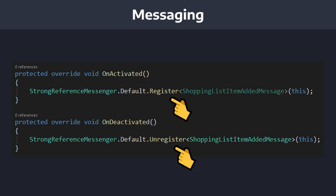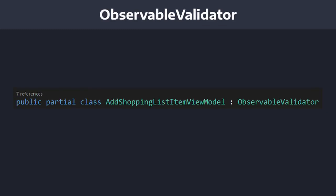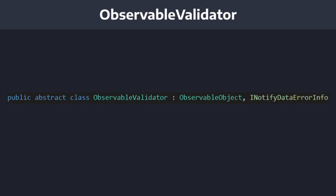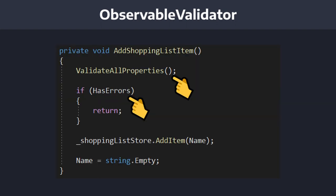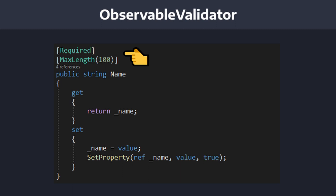Most importantly, these lifecycle methods on ObservableRecipient are perfect for subscribing to messengers and cleaning up subscriptions. The MVVM Toolkit also exposes an ObservableValidator that extends ObservableObject and provides an implementation for INotifyDataErrorInfo, exposing helpful methods for validation. It allows us to use validation attributes on our properties, so instead of doing validation in massive setters, we can apply that validation declaratively.